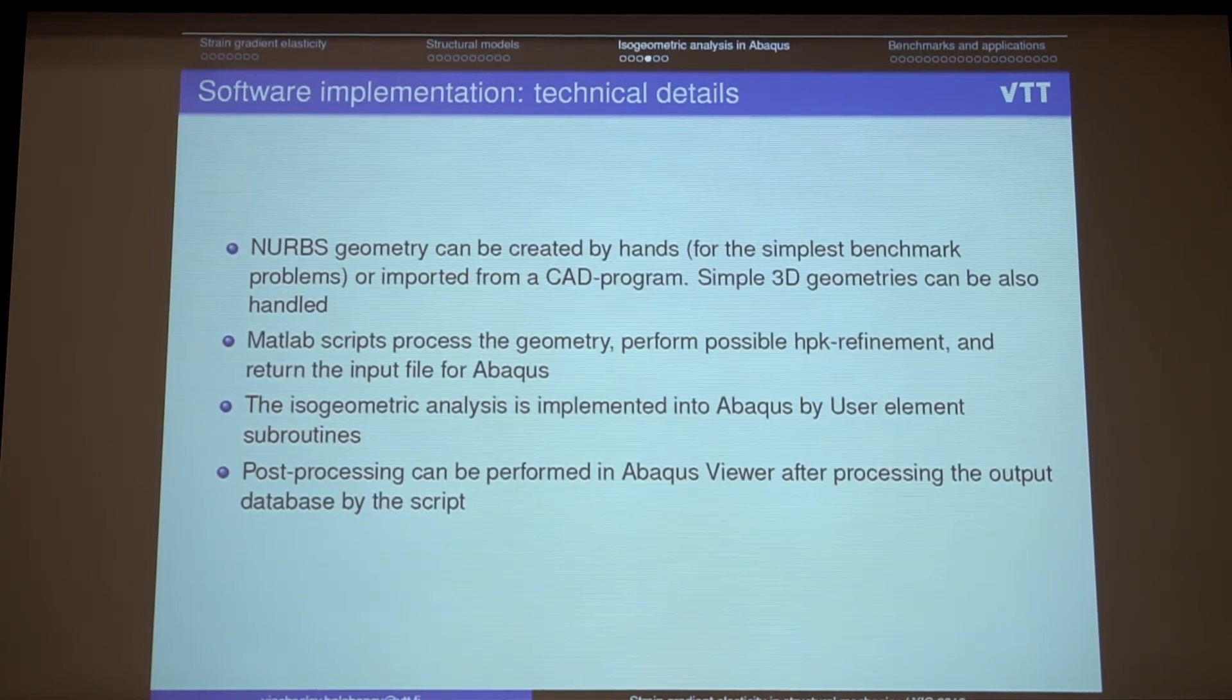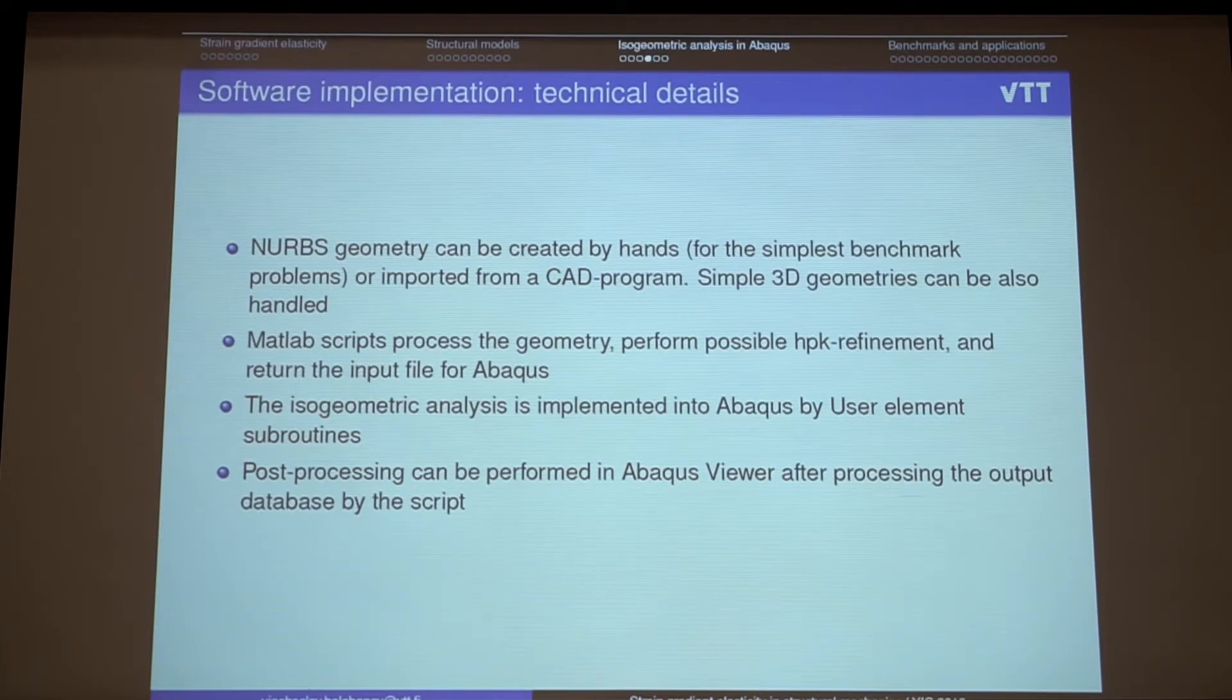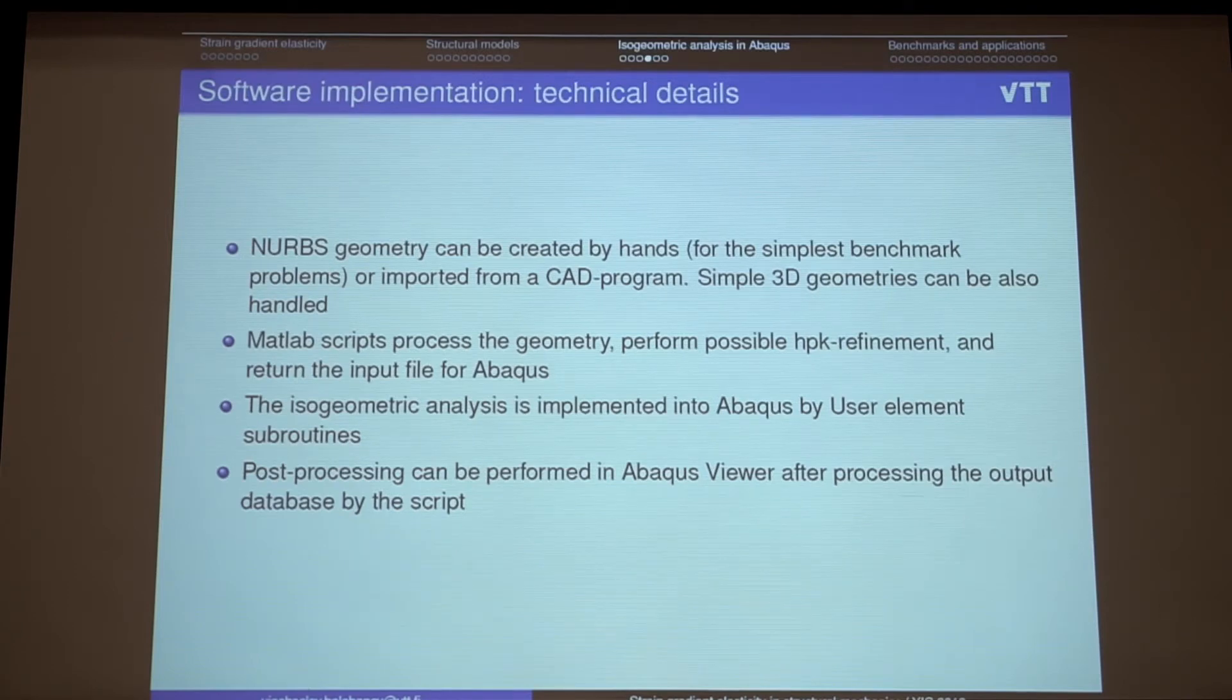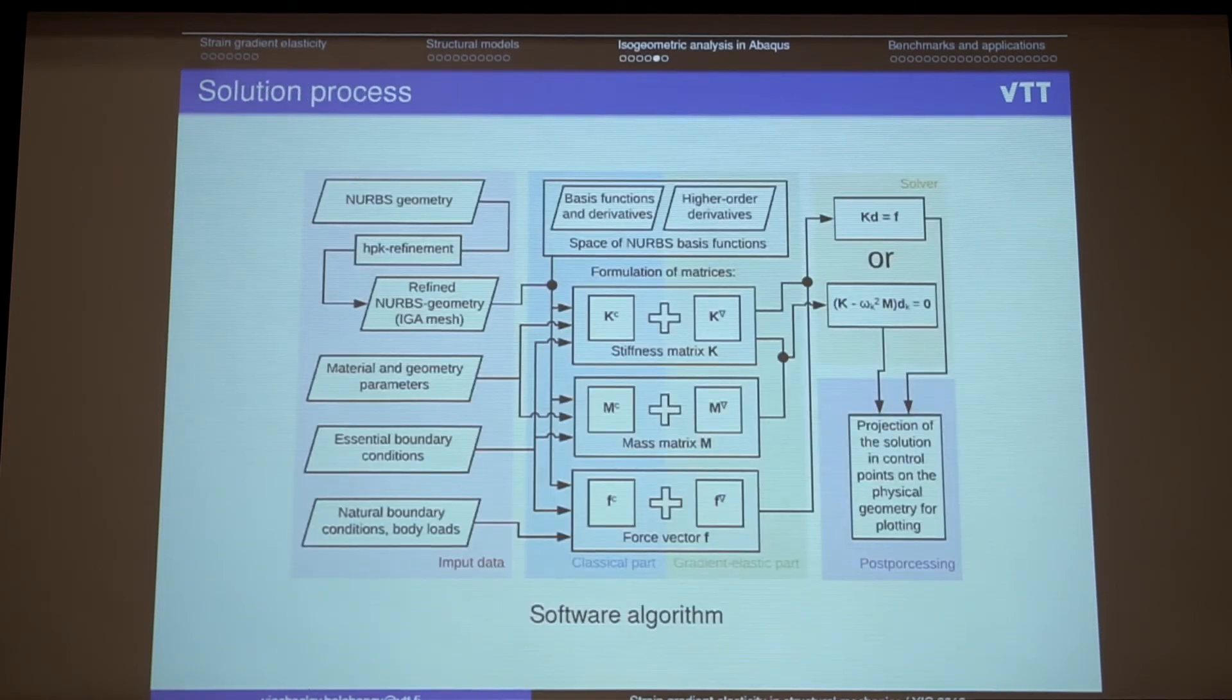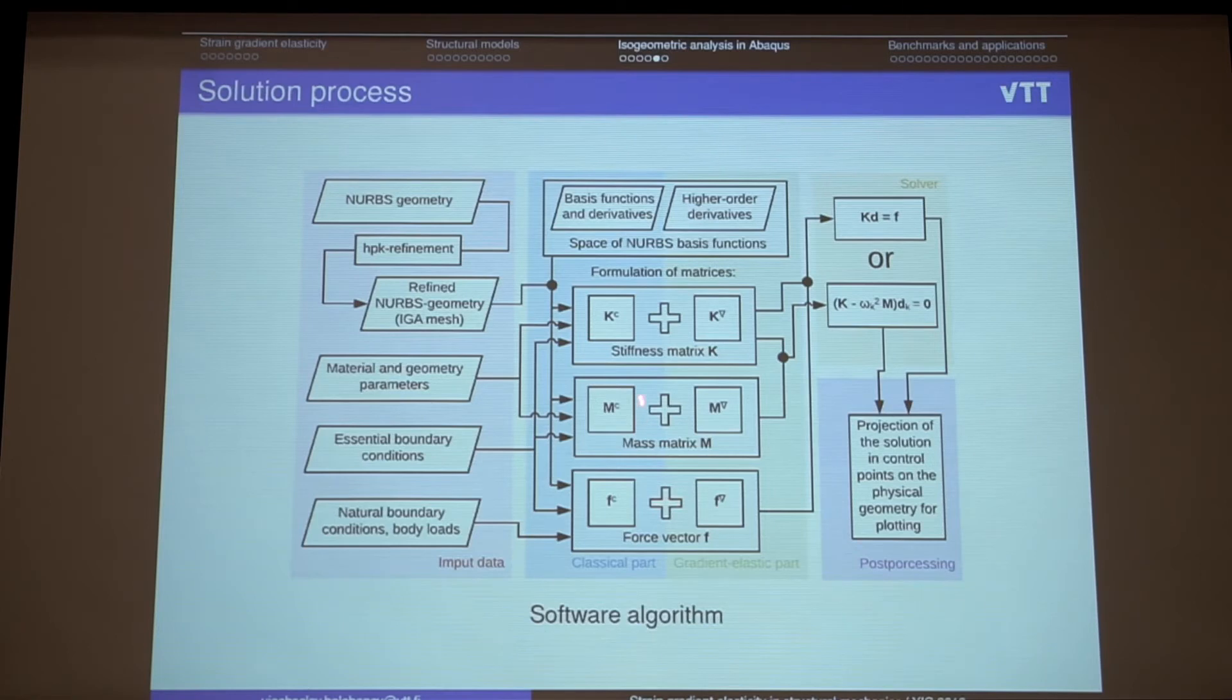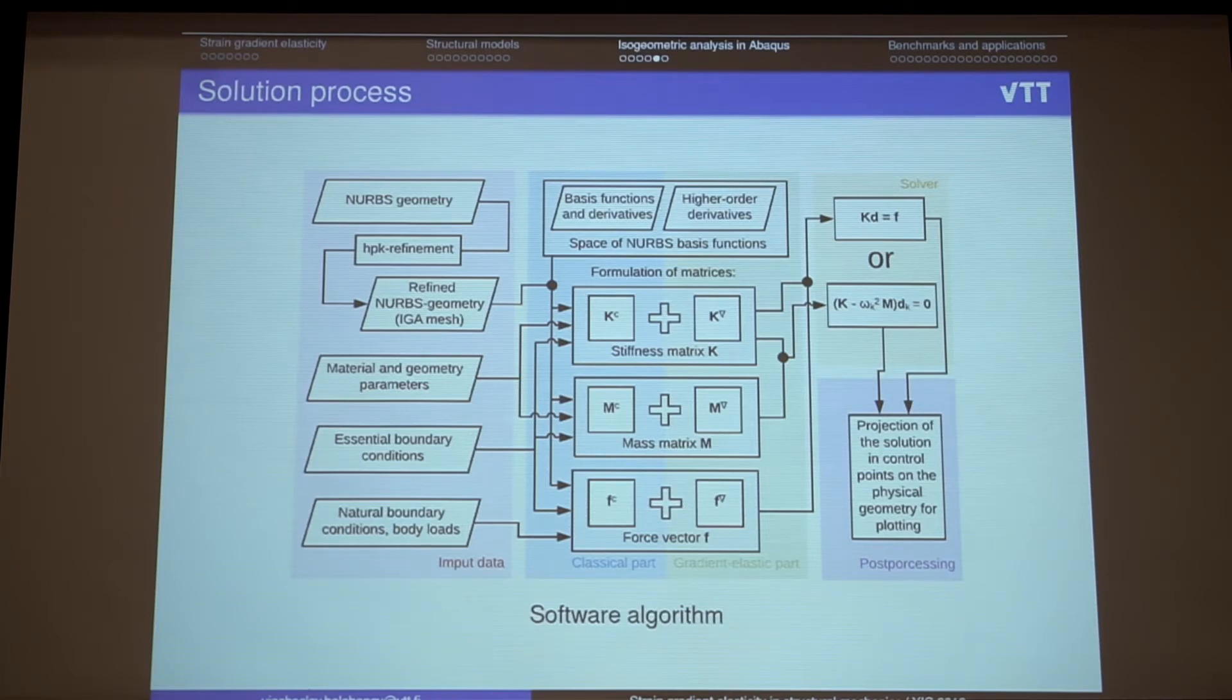But actually some of the steps can be also performed to any other programs. Like for example, we are not... We not need to use Abacus Solver. We can use some external free software for IGA. And this scheme shows just some details about the solution process. And the main difference between classical elasticity and strain gradient elasticity. That we have these additions to stiffness and mass matrix or force vector. And that's actually it. So the idea is quite simple here.